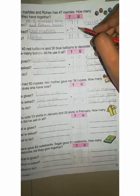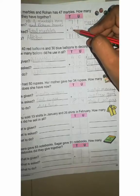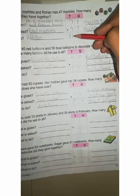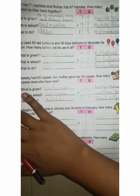71 plus 47. Now 1 plus 7, how much? 8. Right. And 7 plus 4, 11. You can write 11. Now numbers of marbles, how much? 118.